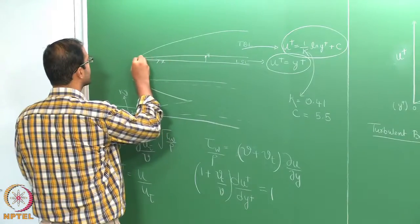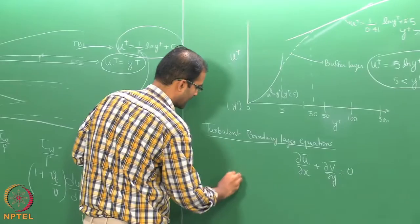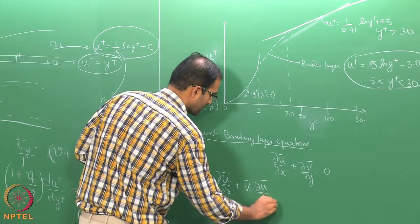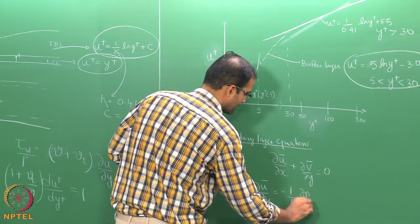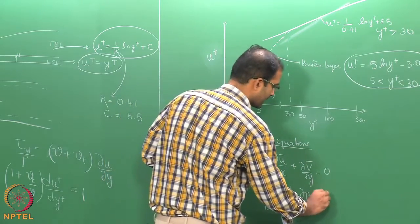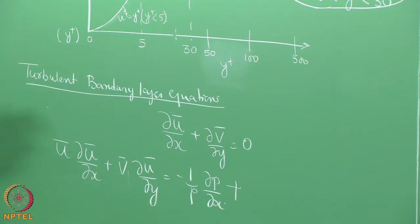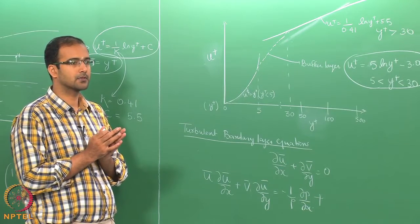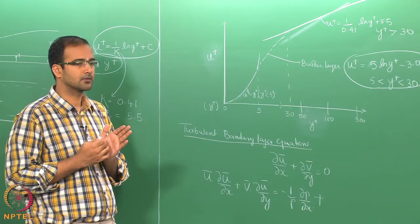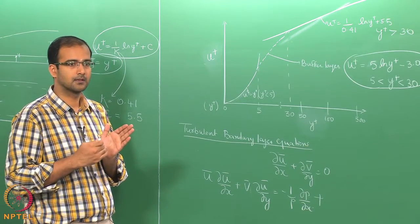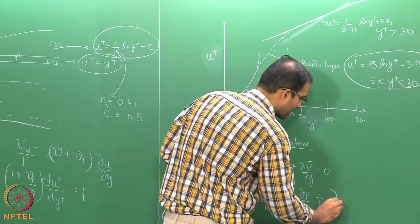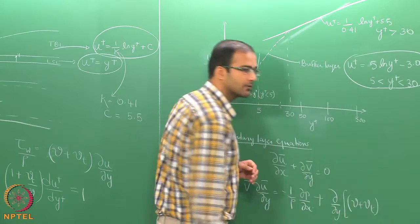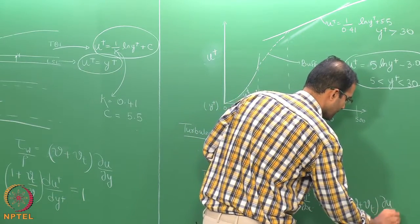The continuity equation remains the same except that instantaneous components are replaced by mean components. Of the two momentum equations, the dominant one is in the x-direction. So we can write: ū(∂ū/∂x) + v̄(∂ū/∂y) equals the advection terms plus the pressure gradient term. For the diffusion term, we have combined turbulent stresses with molecular diffusion. According to order-of-magnitude analysis, the dominant diffusion is in the y-direction, so we retain d/dy of (ν + ν_t) du/dy.